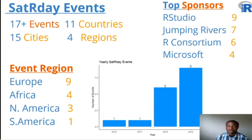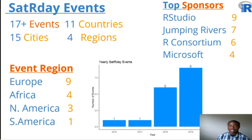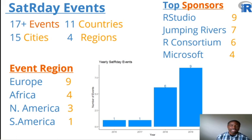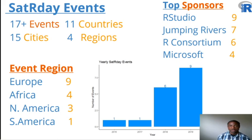SatRdays has been a huge contributor to the R community, and let's look at what's been happening with those events. Growth went from just a single event in 2016 and 2017 to six events in 2018 and then nine in 2019. Also interesting is Europe was number one, but number two is Africa, which has not ranked so well relative to other regions and continents in prior slides.